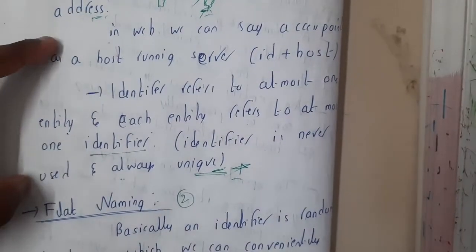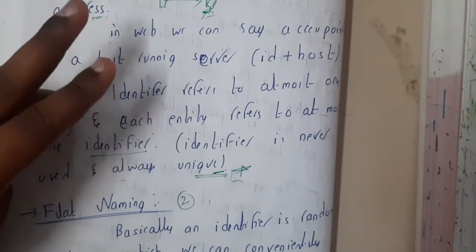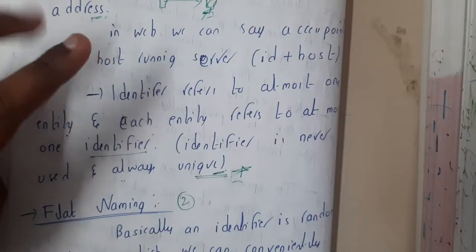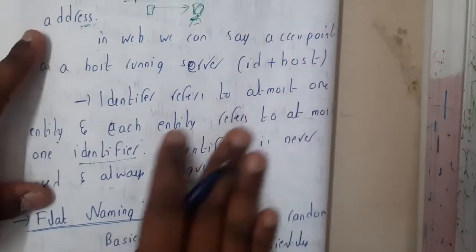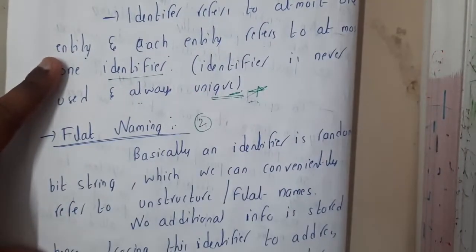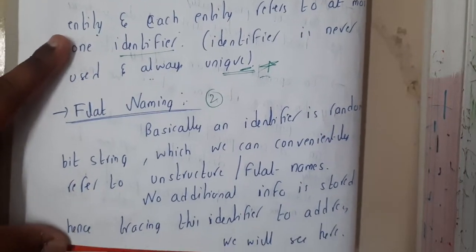Okay, yes. So now I hope everyone got a clear idea about the three terminologies: identifier, address, and name. Yes, so I hope everyone got a clear idea.